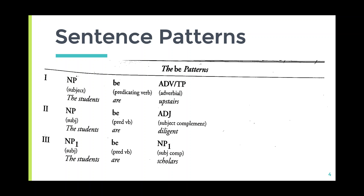In pattern one: noun or phrase is the form, subject is the function; verb 'to be' is the predicating verb; and adverb of time or place functions as adverbial. Example: 'The students are upstairs.' 'The students' is the noun phrase functioning as subject; 'are' is the predicating verb; and 'upstairs' is an adverb of place functioning as adverbial.